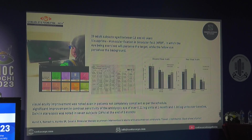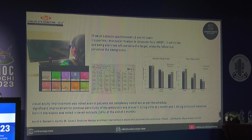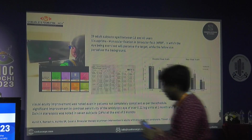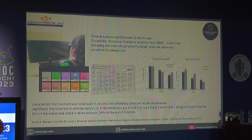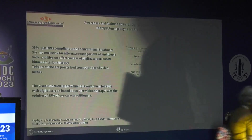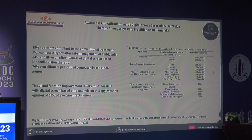Over time we developed our own system, partnering with a technology company based in Chennai. This system uses multiple ways of stimulating, based on both the dichoptic and synoptic principles. We published a study on 29 adult subjects aged 18 to 40 with anisometropic amblyopia. Even in those not fully compliant, we found significant improvement, and many also had a significant gain in stereopsis.